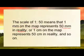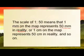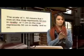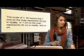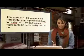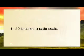Or one centimetre on the map represents 50 centimetres in reality, and vice versa. The first number represents the measurement on the map, the second one in real life or on the ground. 1 to 50 is a ratio scale.